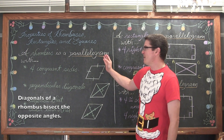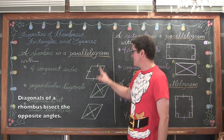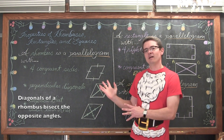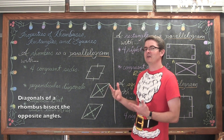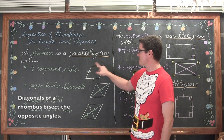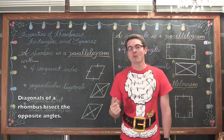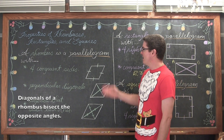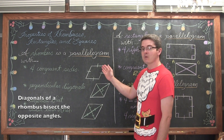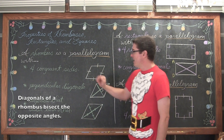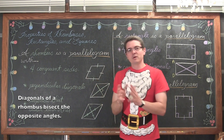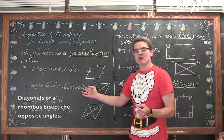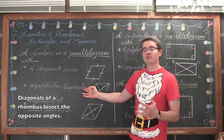So a rhombus - a rhombus is a parallelogram with four congruent sides. Every single one of the sides are congruent. Just because you have a four-sided figure with four equal sides, it is not automatically a square. A square has more requirements than just having four sides which are equal. So we have a parallelogram which is a rhombus because the four sides are equal. The special characteristic of a rhombus is that the diagonals don't just bisect each other like they do in every other parallelogram, but they are also perpendicular.